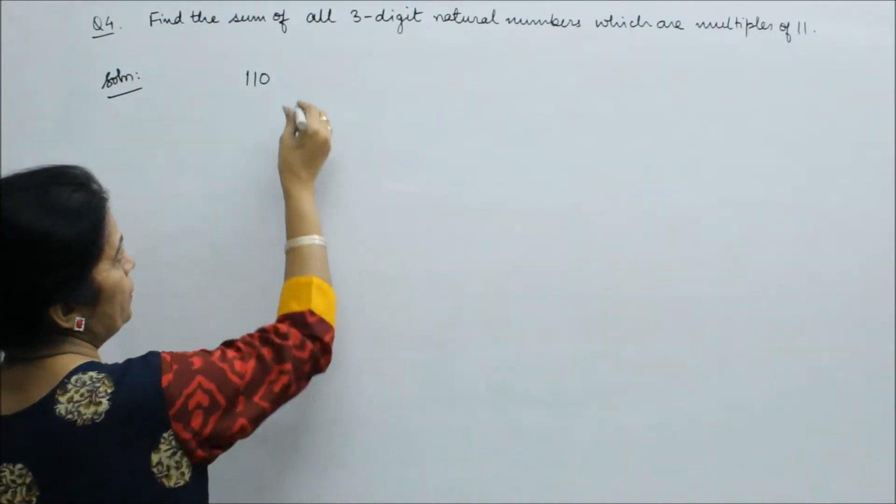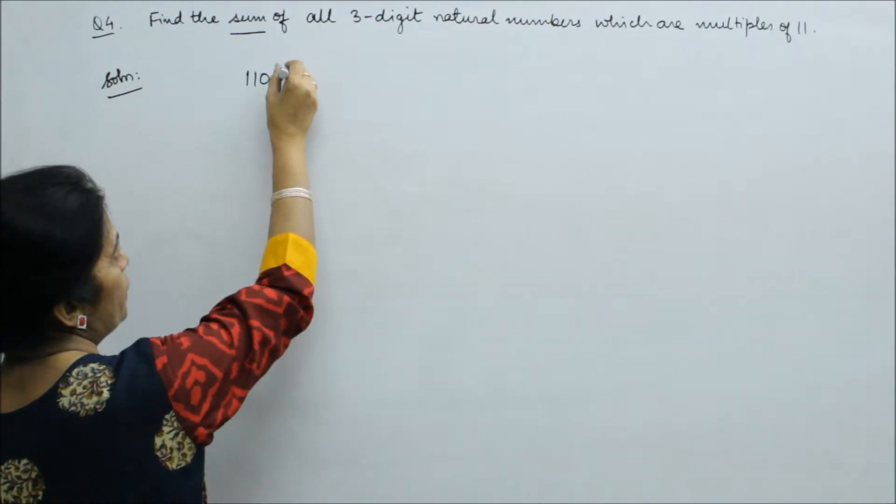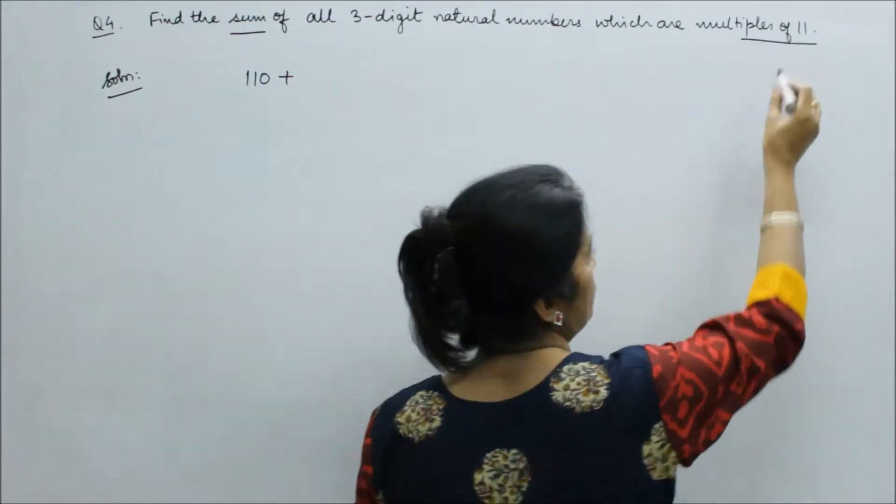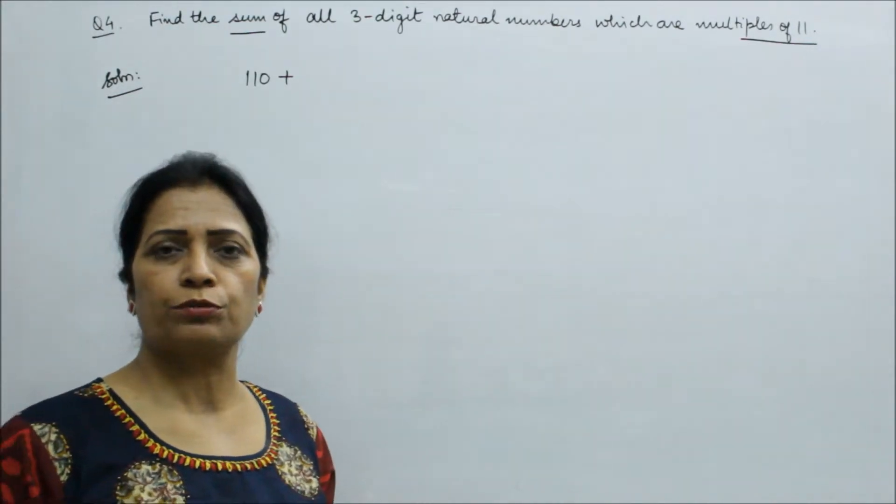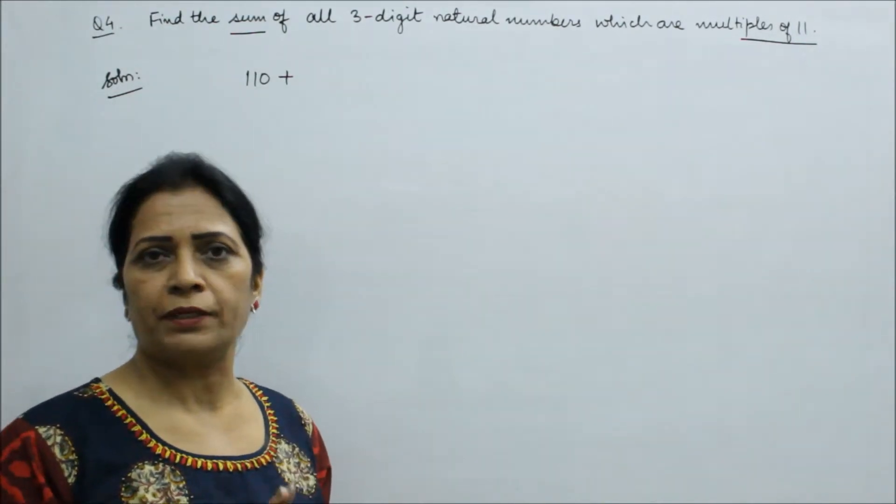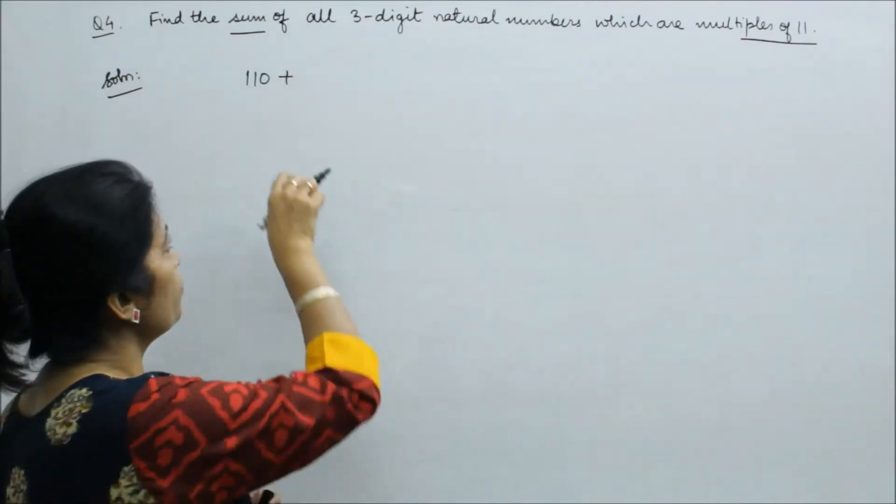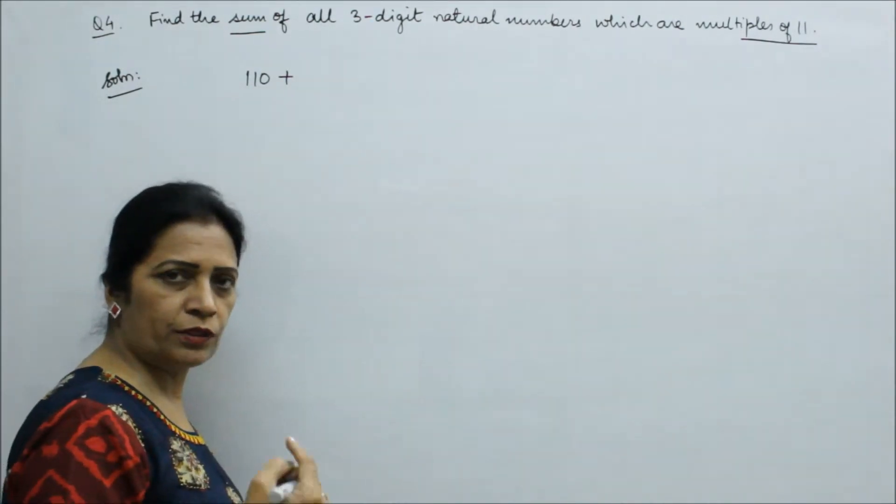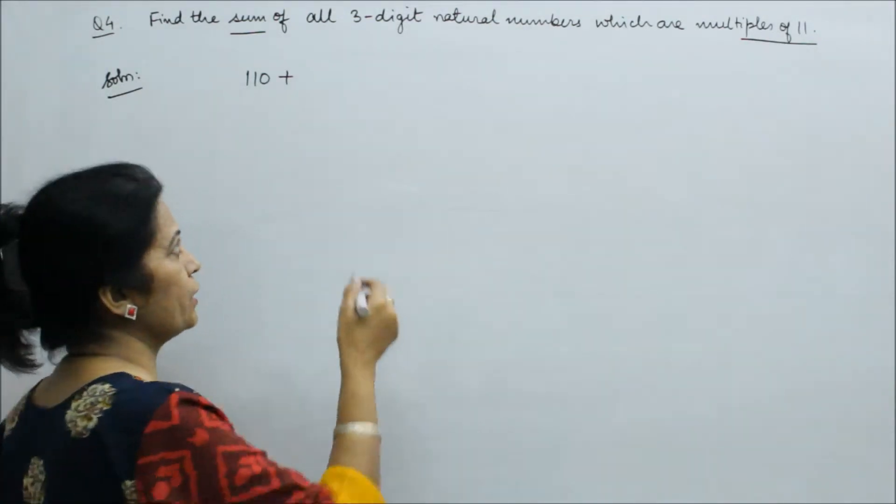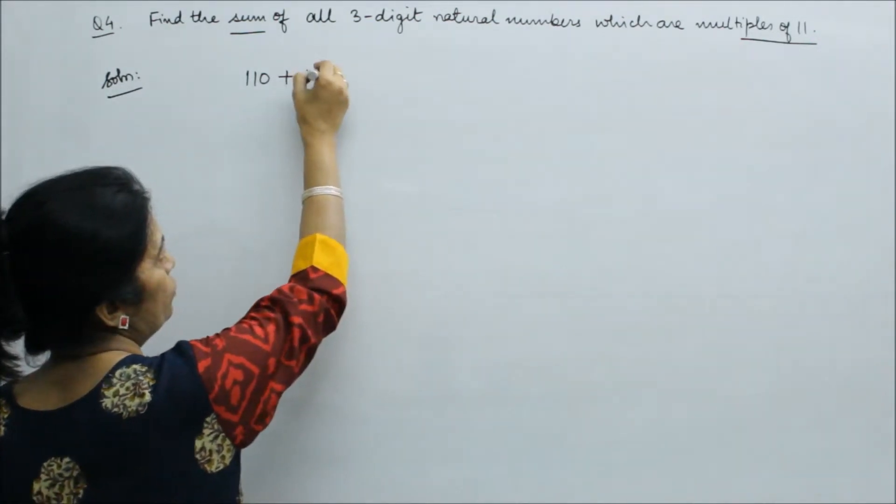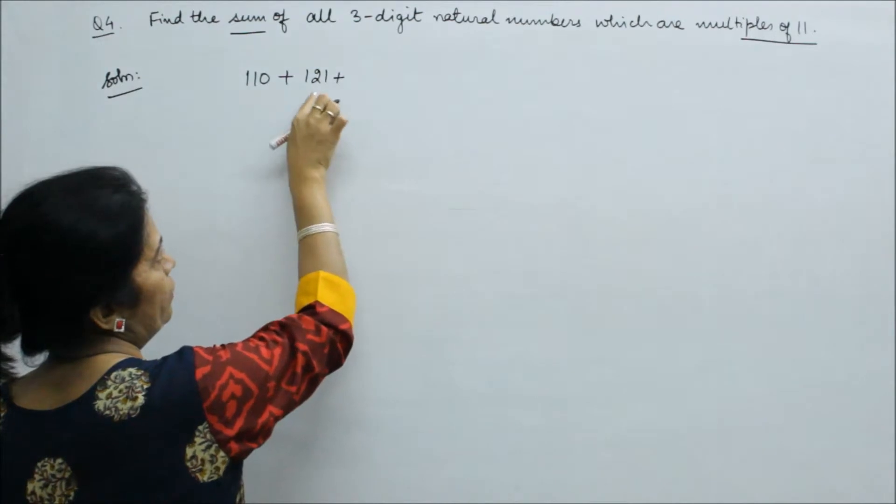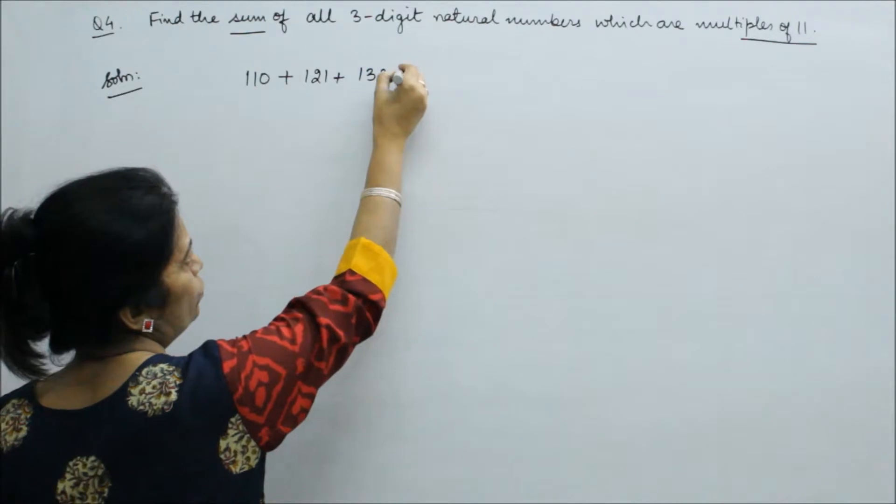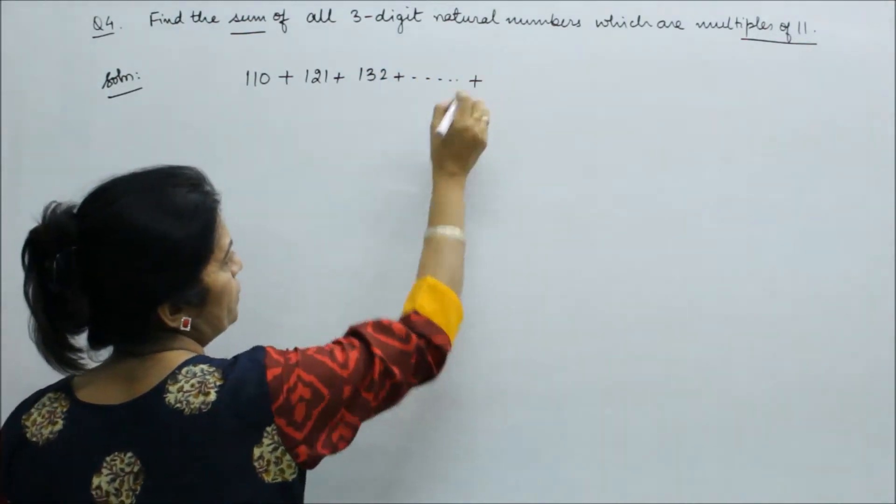Then, for the sum we need to add. Which numbers should we take? 11. Which should be multiples or divisible. The method is the same. So we add 11. Next is 121, then we add 11 and get 132. Last number is the last 3-digit number.